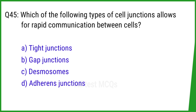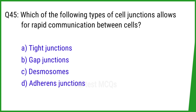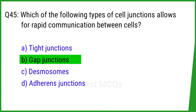Question number 45. Which of the following types of cell junction allows for rapid communication between cells? The right answer is option B: Gap junction.